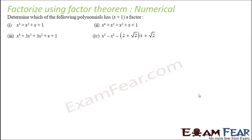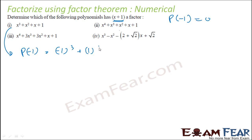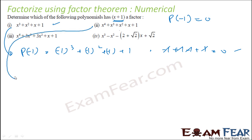Here we determine which of the following polynomials has (x plus 1) as a factor. If (x plus 1) is a factor, then p(minus 1) will equal 0. Let's try the first one: p(minus 1) equals (minus 1) cube plus (minus 1) square plus (minus 1) plus 1. This becomes minus 1 plus 1 plus 1 minus 1 plus 1, which is 0. So x plus 1 is a factor of this polynomial.